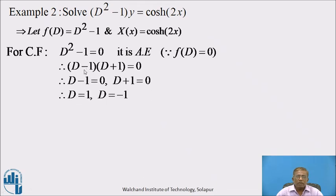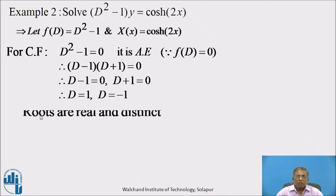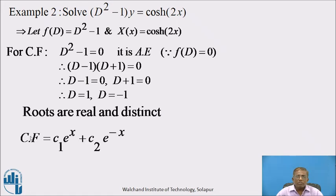Factorizing: (D − 1)(D + 1) = 0, giving D = 1 and D = −1. The roots are real and distinct. Hence, the complementary function CF = C₁·e^x + C₂·e^(−x).